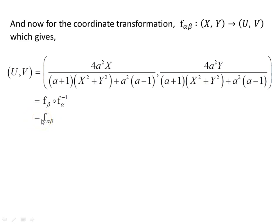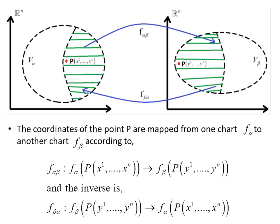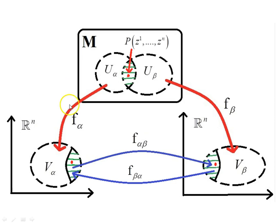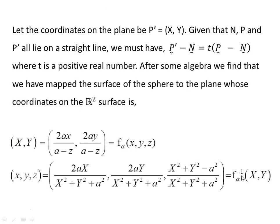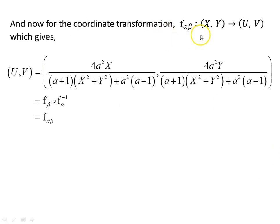Going back a couple of slides: F_alpha here, F_beta is this, and composing with the inverse of F_alpha takes you back to the intersection set, and then F_beta takes you from that set back to Euclidean space. So finally, F_beta composed of F_alpha inverse is the transformation from the (X, Y) coordinate system to the (U, V) coordinate system — F_alpha_beta, the coordinate transformation.